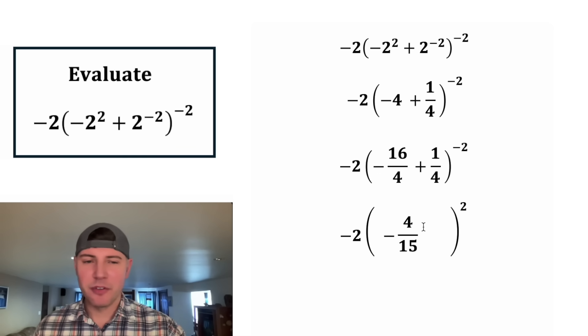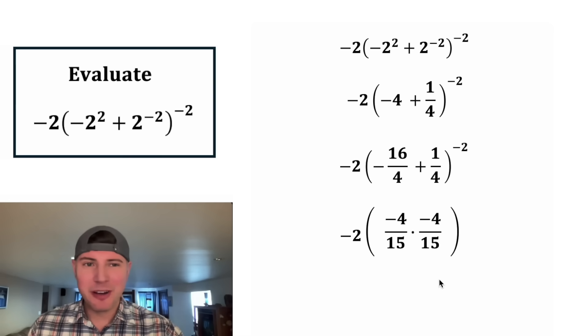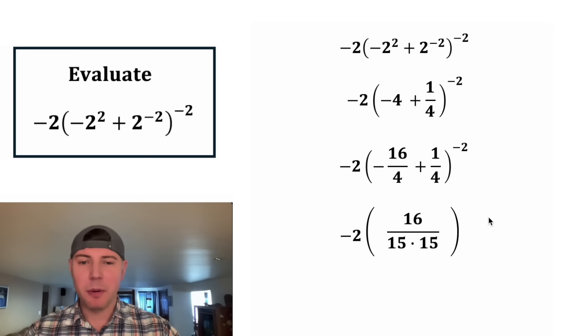Now we have negative four over 15 in the parentheses. This squared means the same thing as this multiplied by itself. And when you're multiplying fractions, you could make them a single fraction and multiply across. Negative four times negative four is positive 16. And 15 times 15 is positive 225.